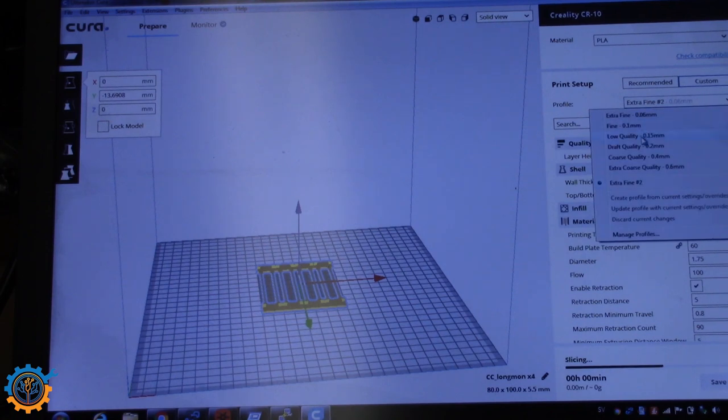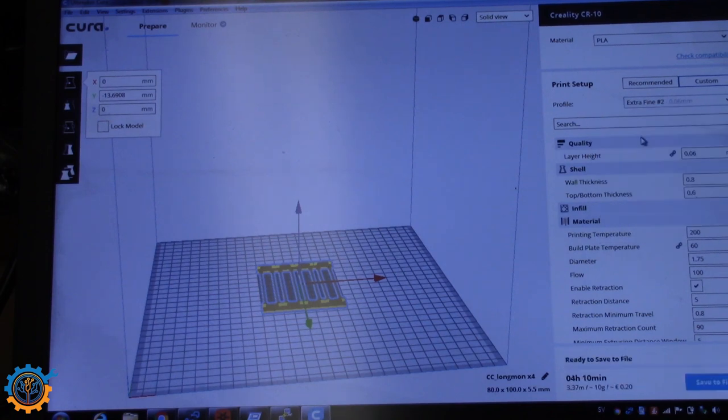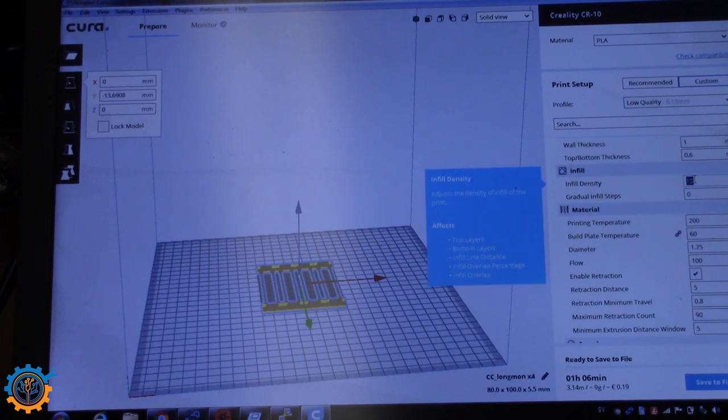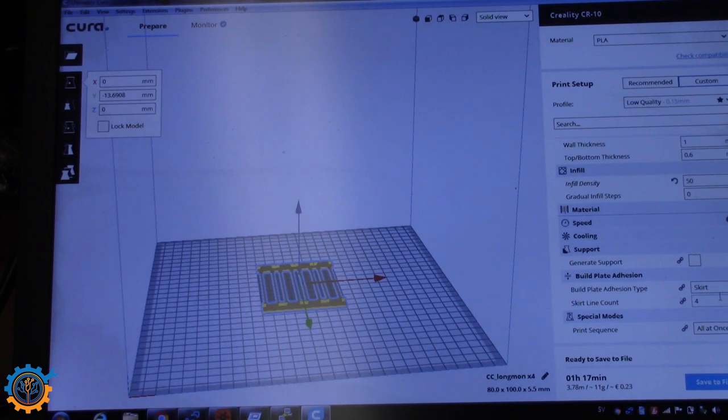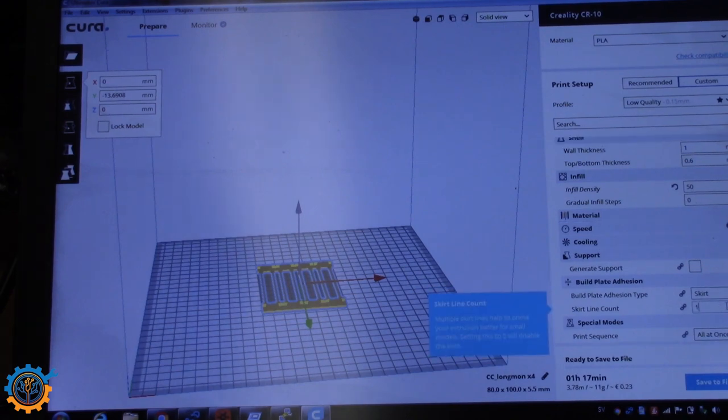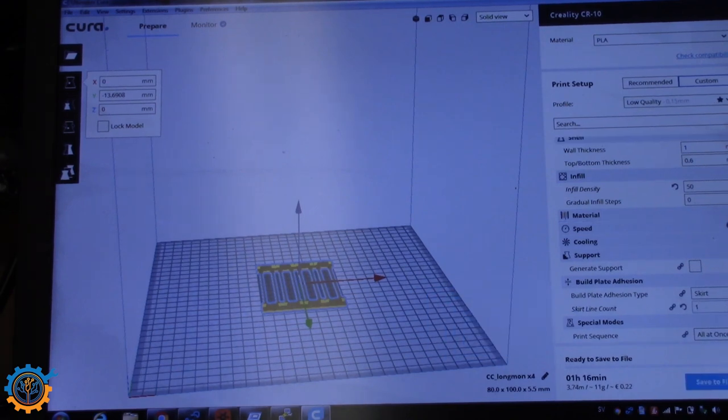I'm going to use low quality. And the infill density I want to be let's say 50%. And I only need one lap around. When that's done, I print via the USB and I start it up.